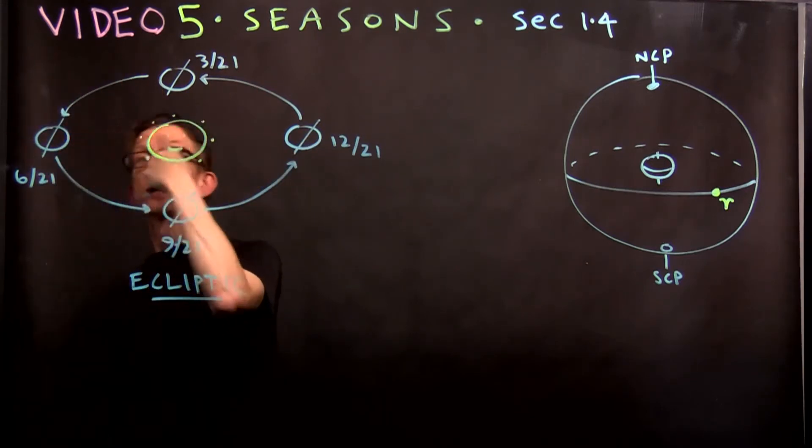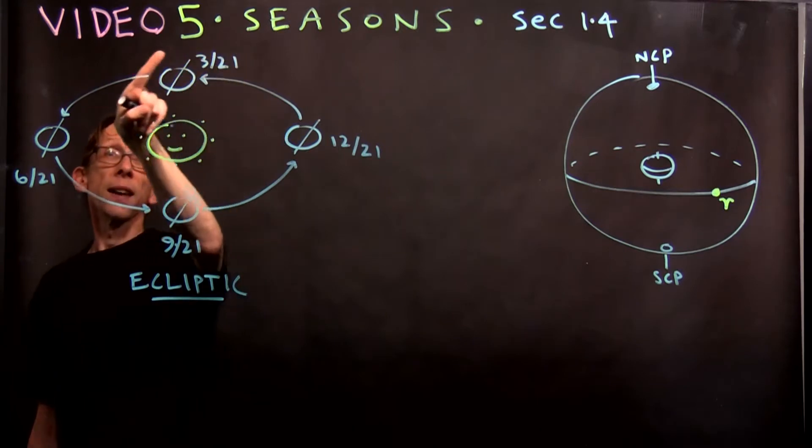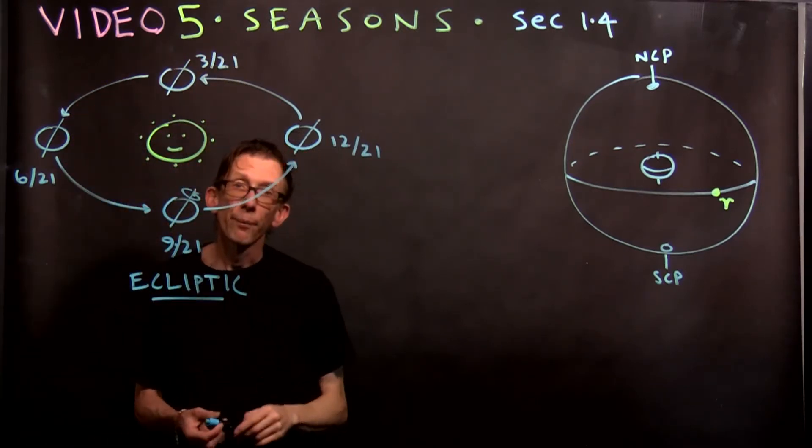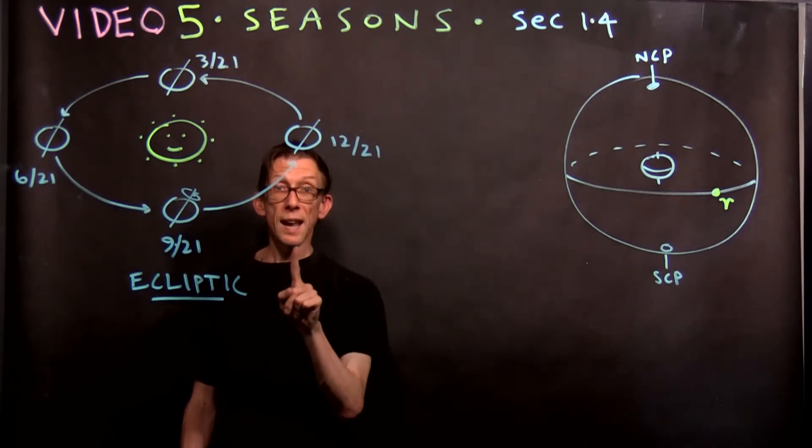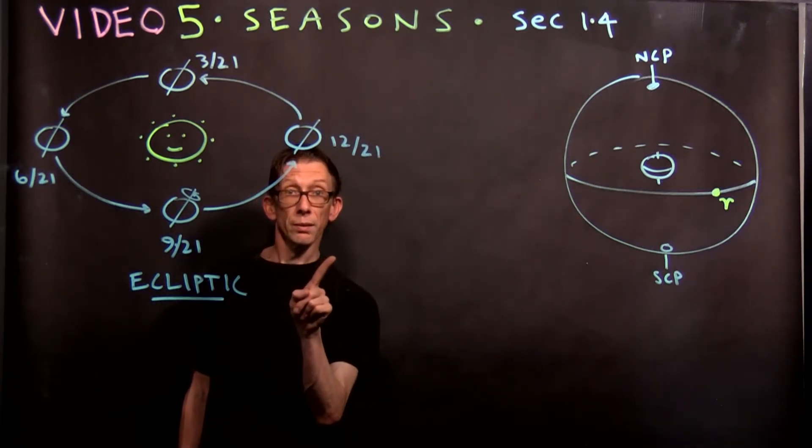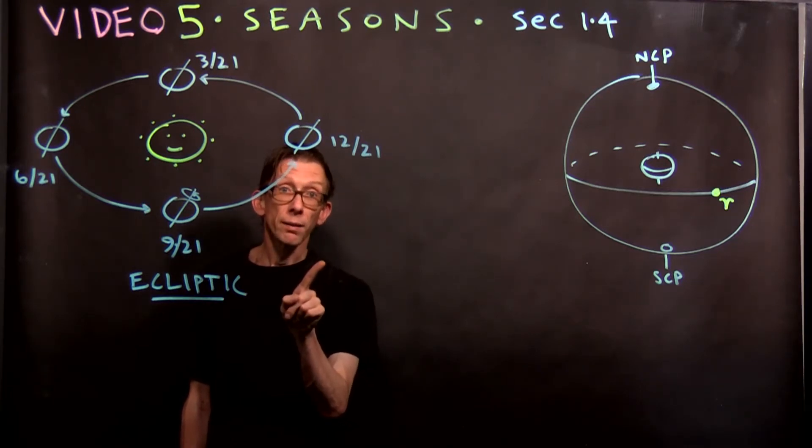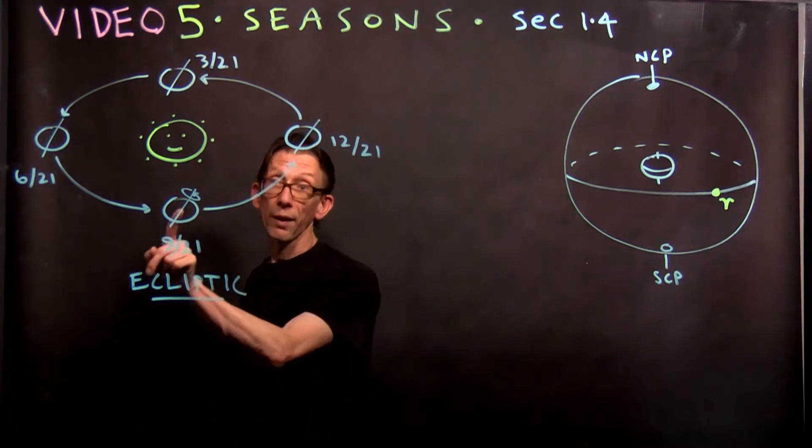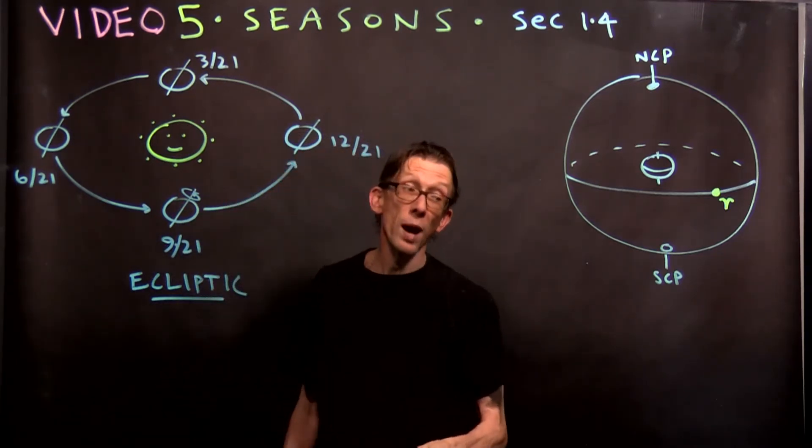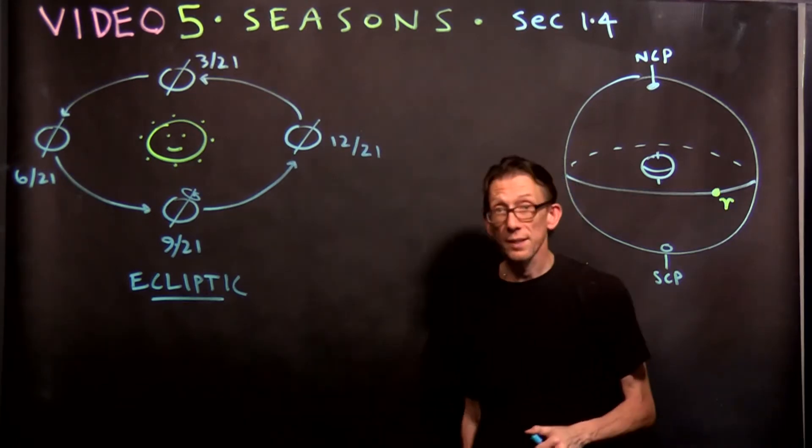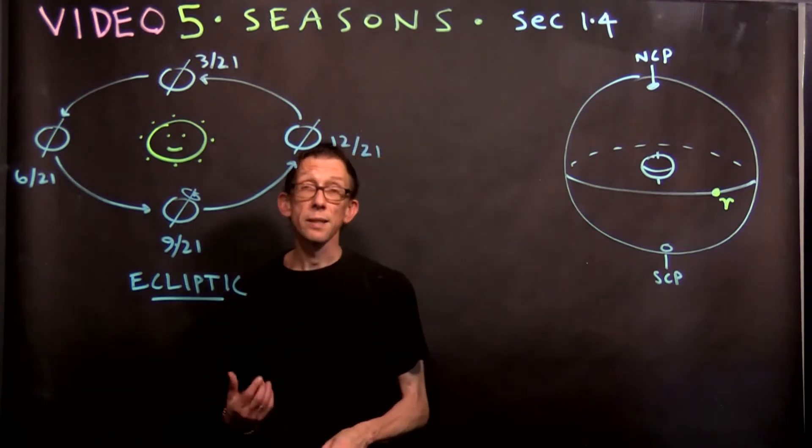And it spins around that tilt, and that tilt remains in place as it goes around the sun like that. It doesn't swing around like this, point in different directions. It stays up and to the right in my drawing as it goes around. It's like a top. The earth is like a top that's spinning on its axis, but its axis is tilted a little bit relative to the table it's sitting on, and going around the sun on. It stays tilted the same way. It is that tilt which gives rise to the seasons.